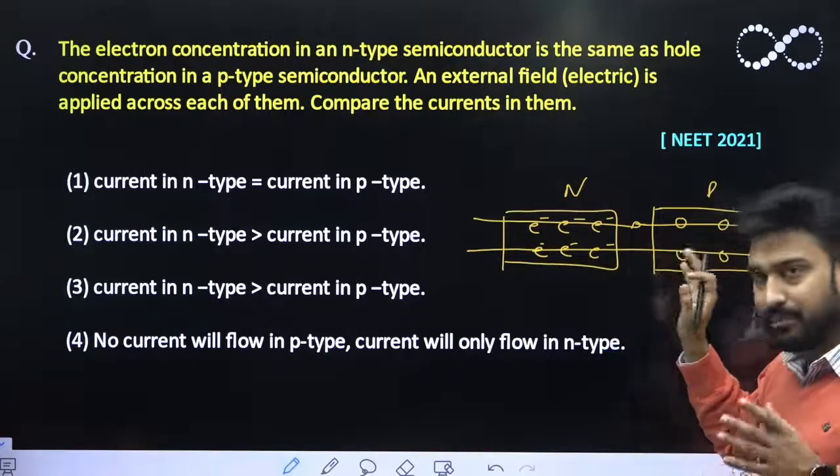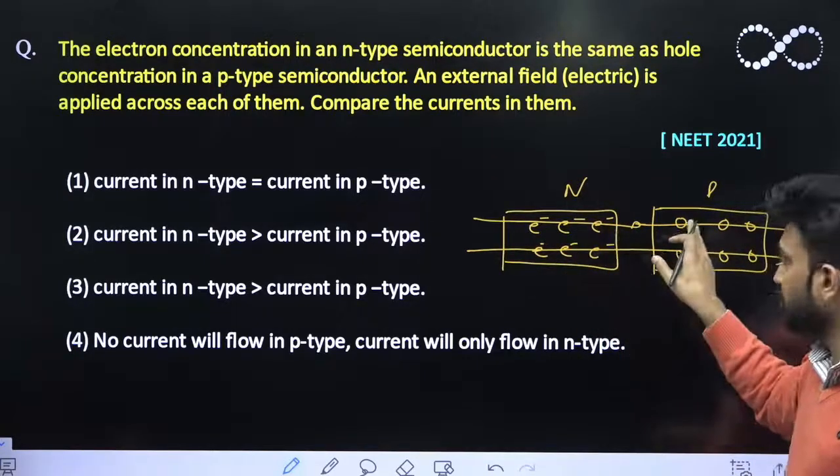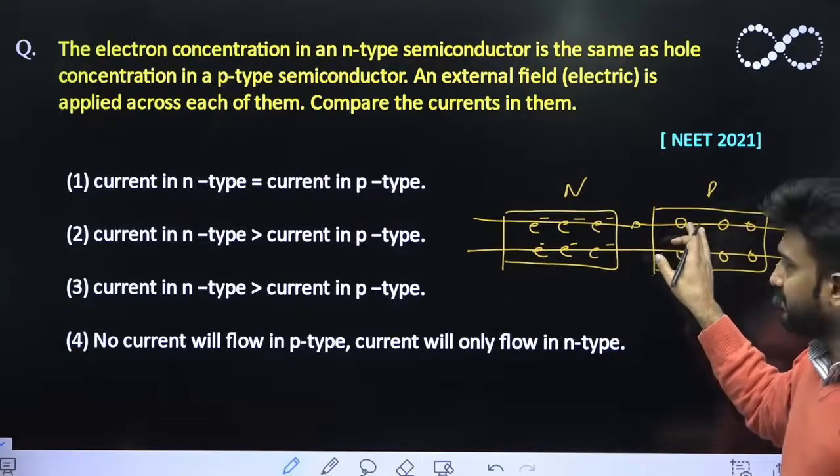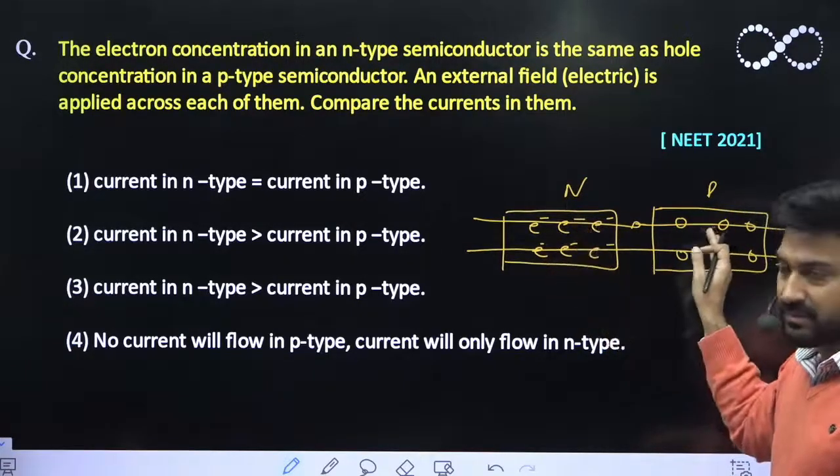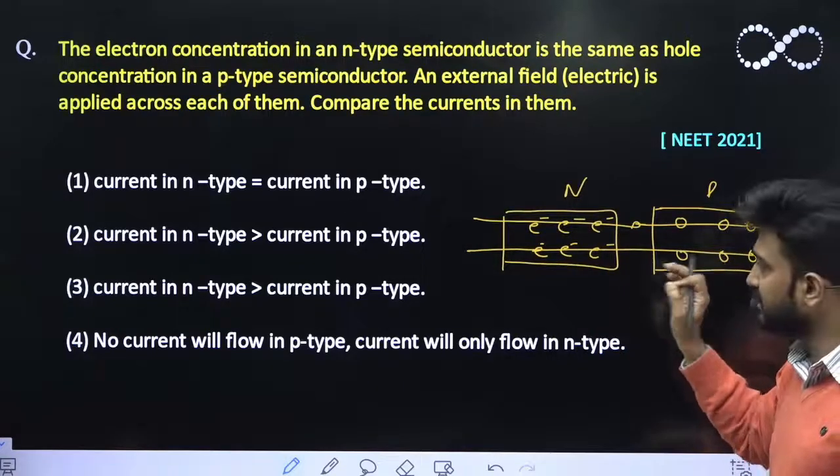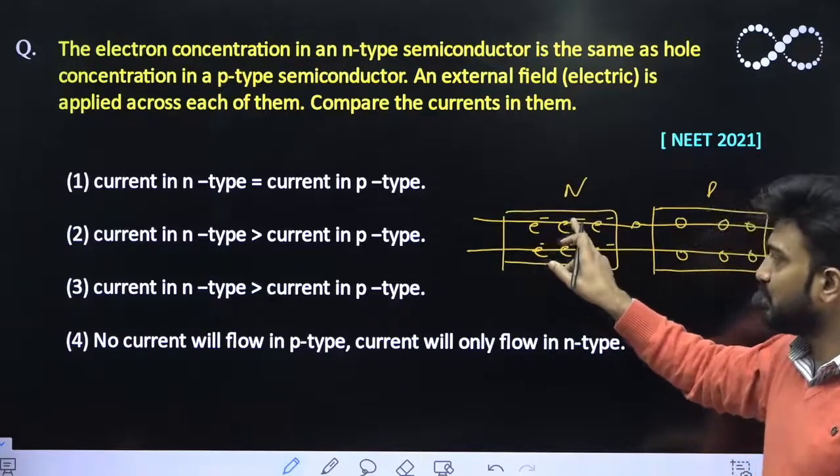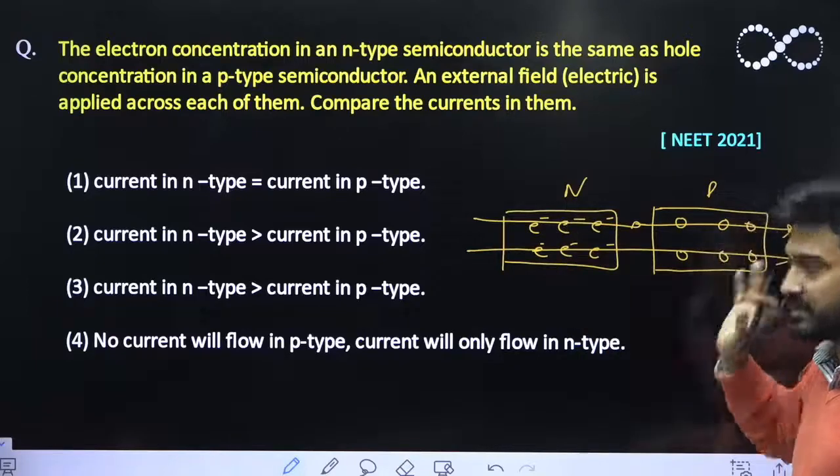Obviously the current in them only depends upon the mobility of these free charge carriers. And the mobility of the electron is much much greater than the mobility of holes. So that means it is easier to move electron in n-type as compared to holes in p-type.